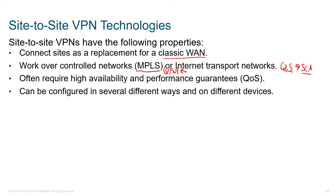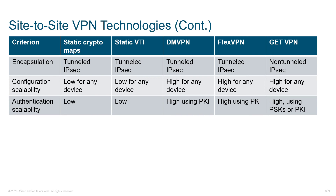You're going from paying hundreds to potentially thousands per month for MPLS versus a standard internet connection. So look at what works best for you. High availability and performance guarantees are often required because when the VPN is loaded with all the applications employees need for day-to-day use, if the VPN goes down, so does productivity.